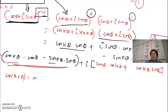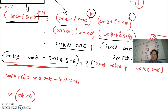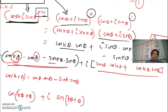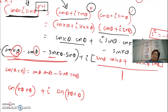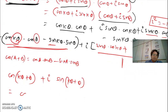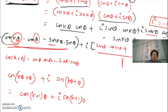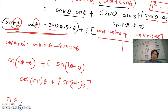So this becomes cos(kθ + θ), because a is kθ and b is θ. Similarly, i times sin(kθ + θ), using the sine compound angle formula. Taking θ common, this is now proven. Write the general statement: it is true for n=1, n=k, and n=k+1, hence it is true for all given conditions. Please do not forget this.